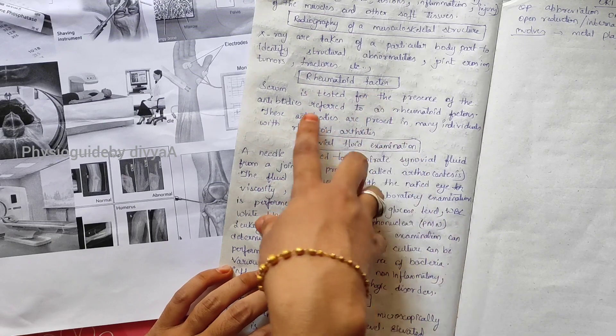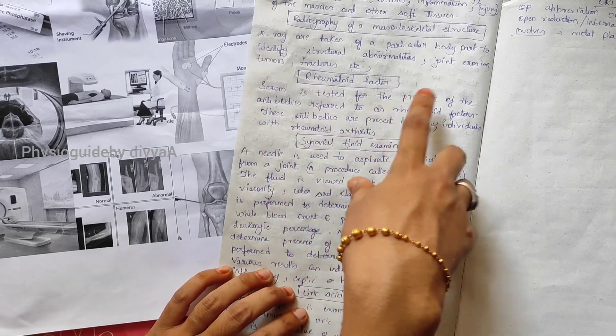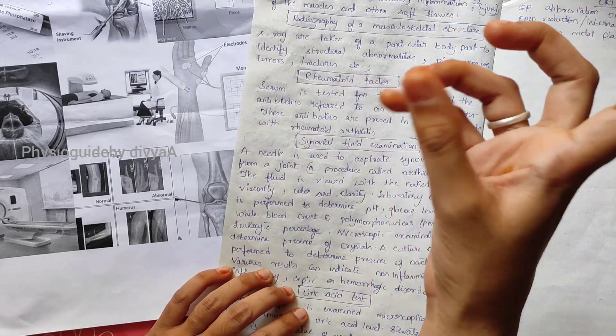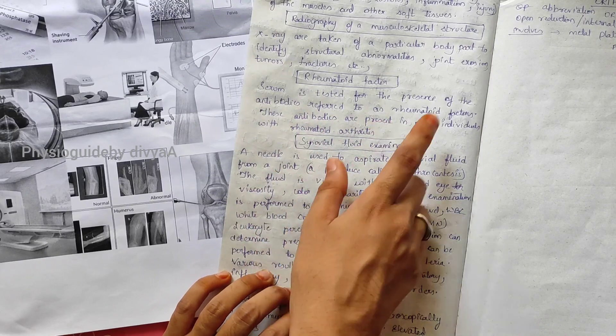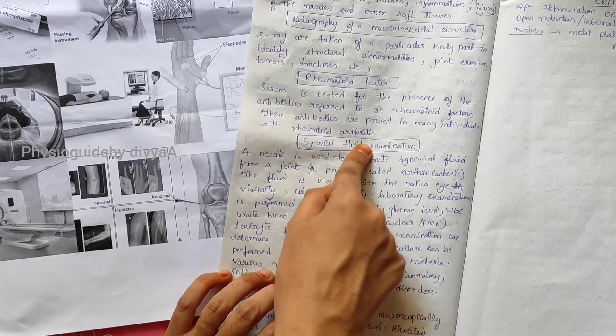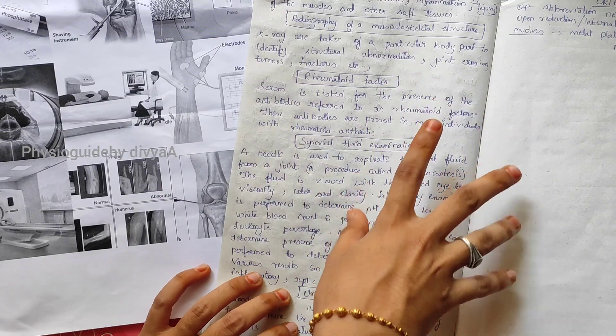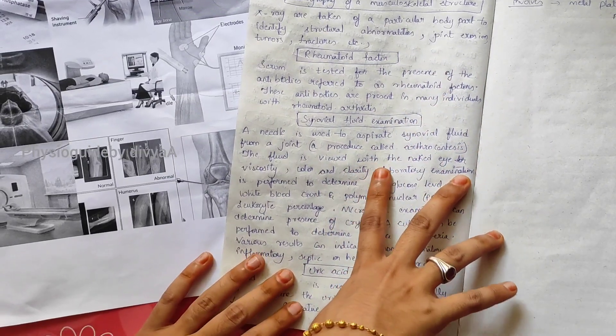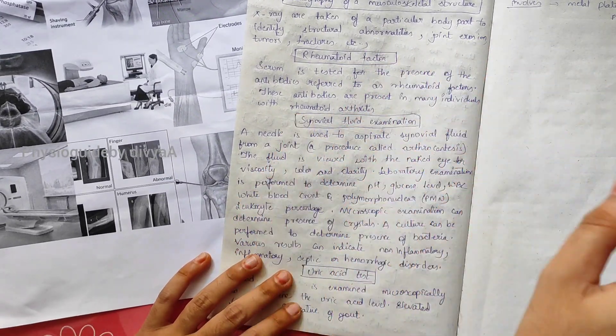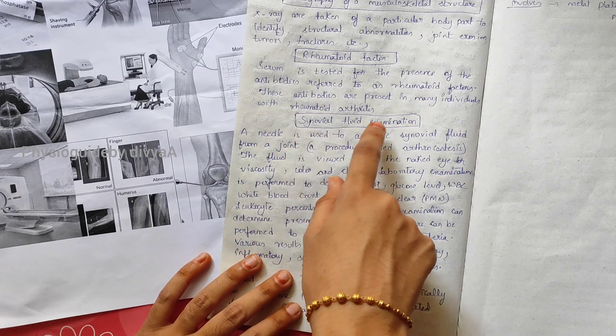Rheumatoid factor: serum is tested for the presence of antibodies. These antibodies are present in many individuals with rheumatoid arthritis. If this antibody is present, we can identify the patient is suffering from rheumatoid arthritis.